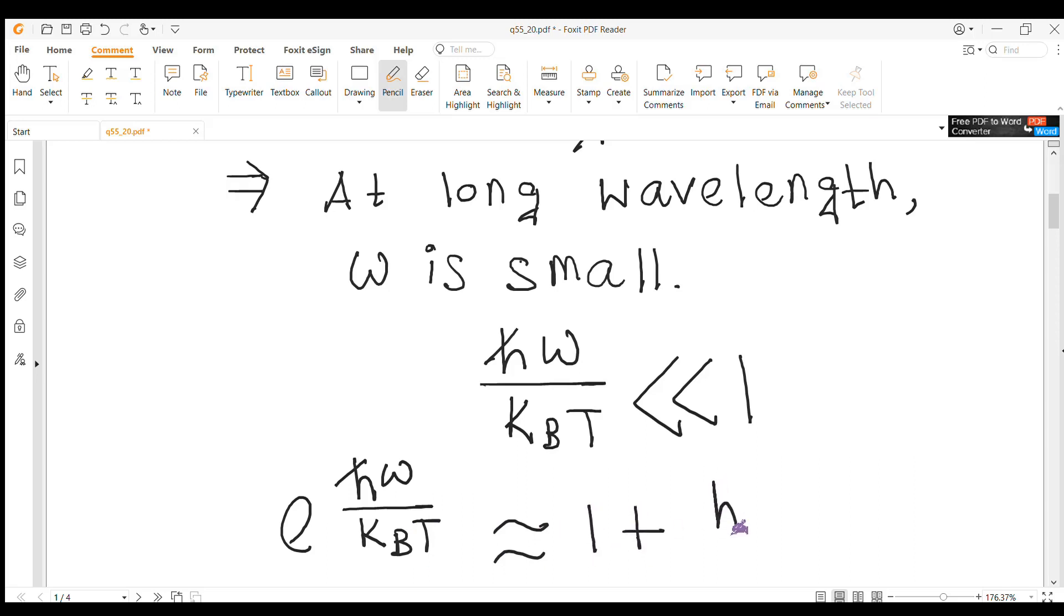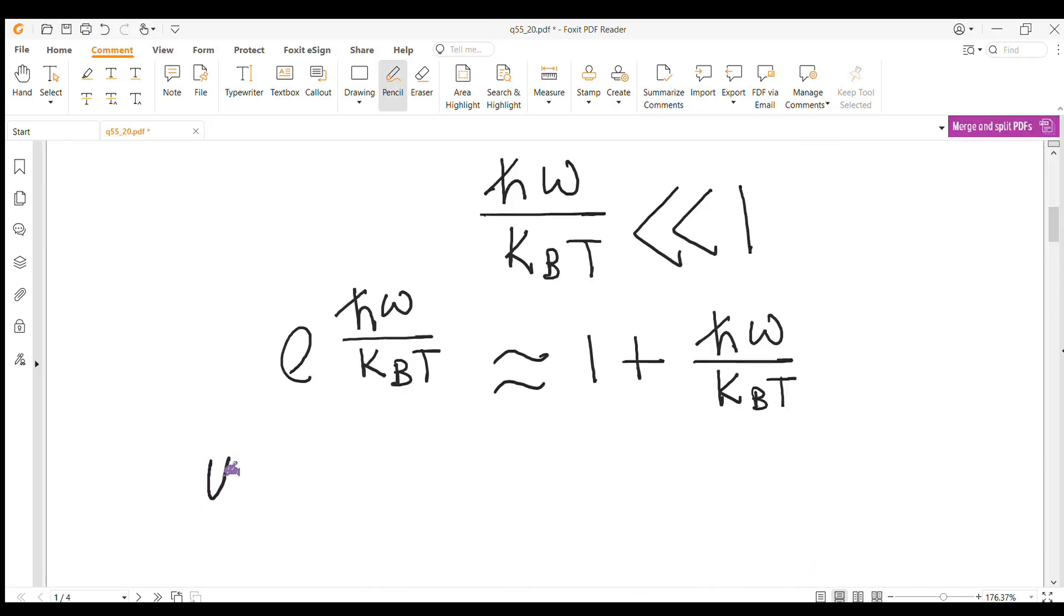In this question we have u equal to h bar omega cubed by pi squared c cubed into e to the power h bar omega by kT, times e to the power h bar omega by kT minus 1.